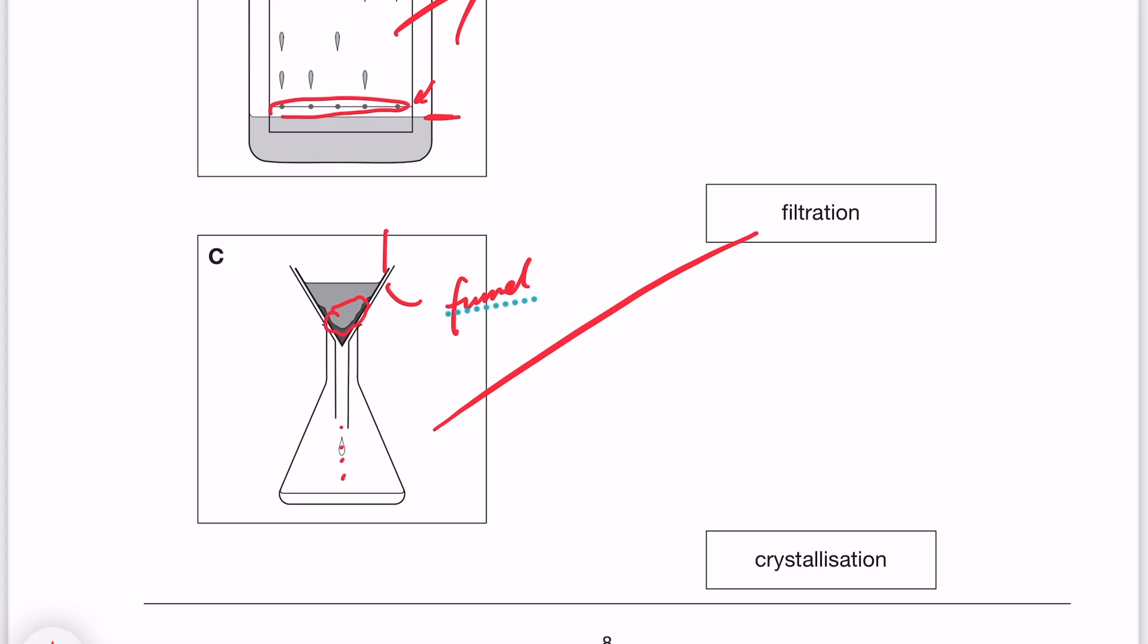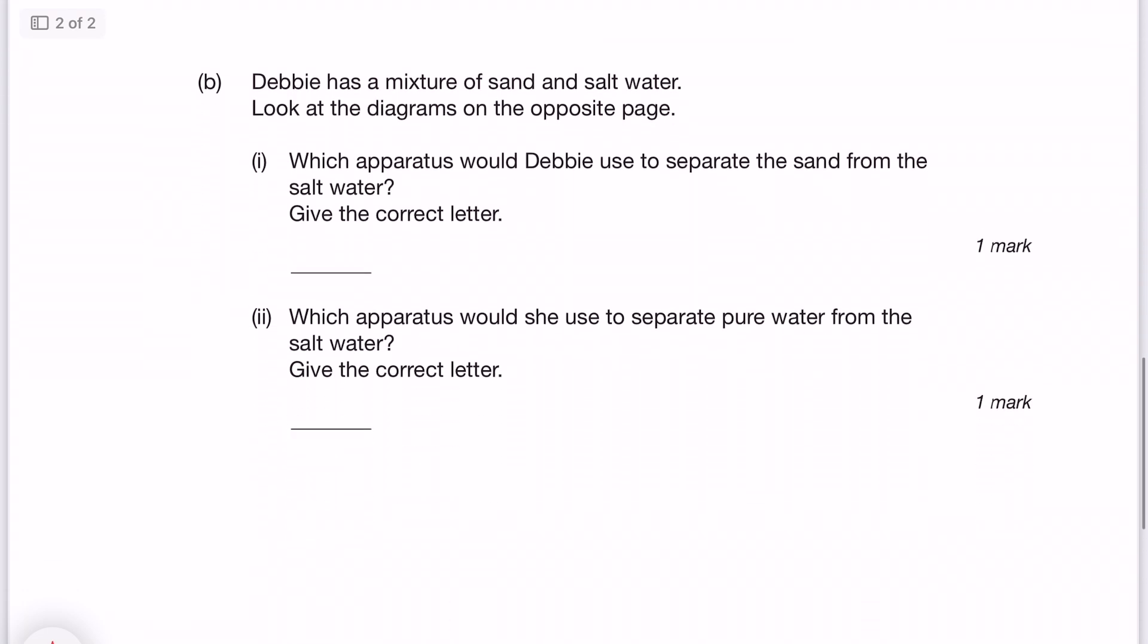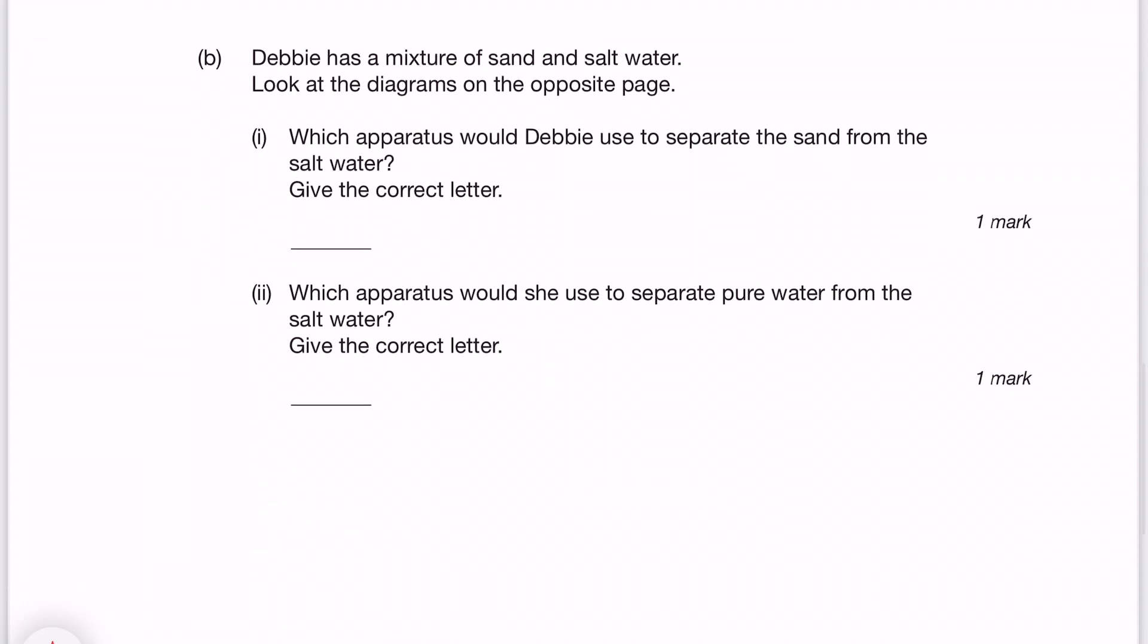Okay, guys, I think we have finished everything on this page. Shall we move on to the next page? In part B, it says Debbie has a mixture of sand and salt water, look at the diagrams on the opposite page, which was the page that we were looking at.